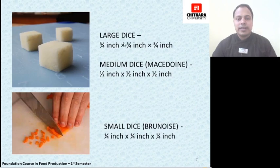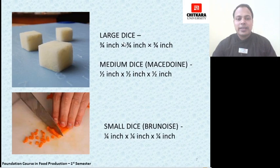In this slide we will talk about large dice cuts of vegetables, which can be used in soup or while roasting or grilling. Then comes medium dice, also known as macedoine, which measures 1.5 inch x 1.5 inch x 1.5 inch — a cuboid or cube shape. Then comes small dice, also known as brunoise, measuring 1/4 of an inch. Thank you.